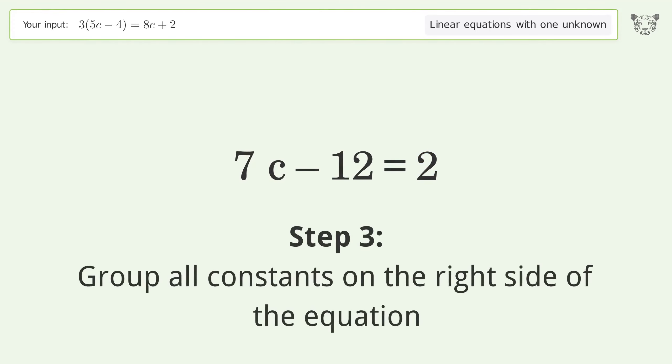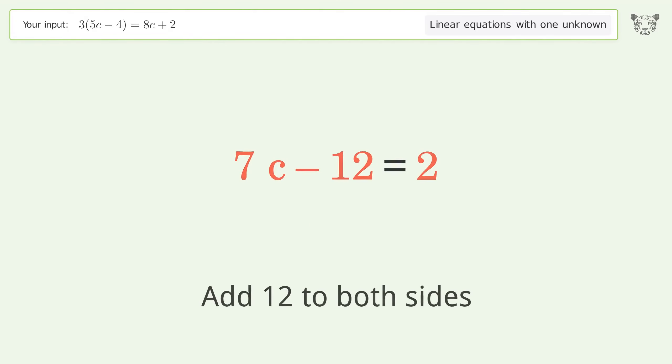Group all constants on the right side of the equation. Add 12 to both sides.